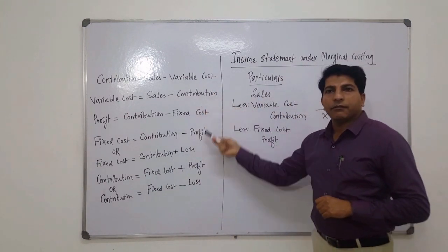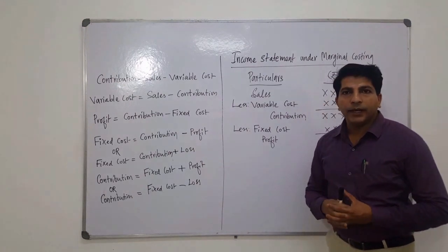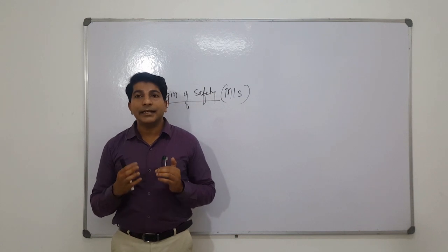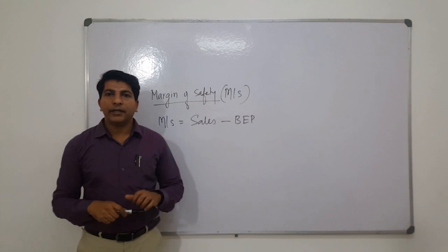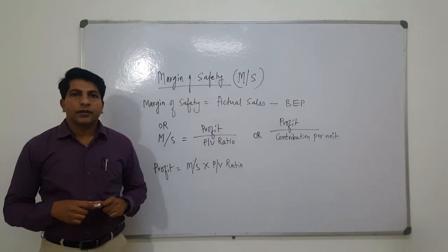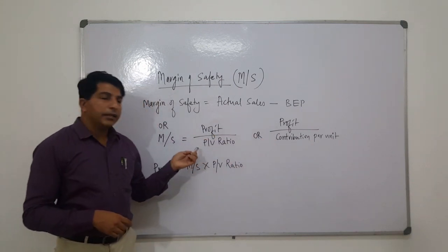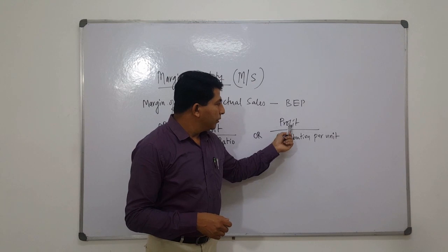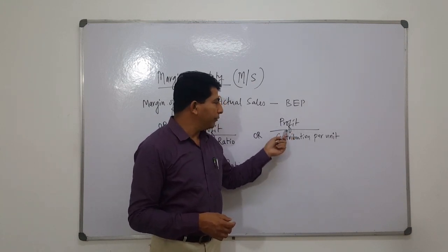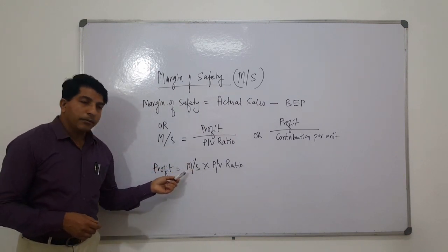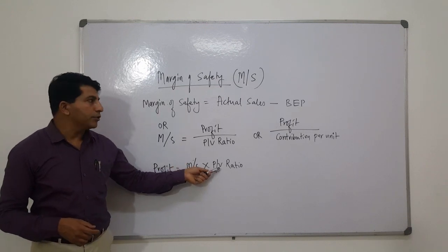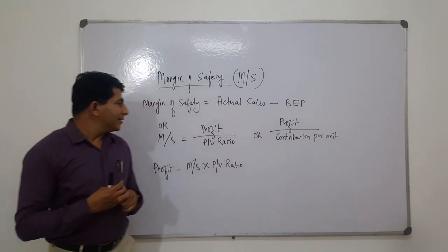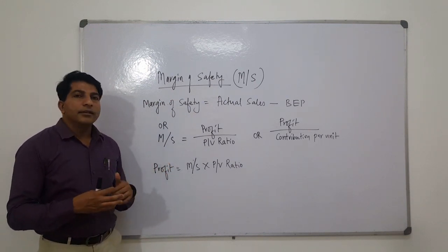Margin of safety may be defined as the difference between actual sales and sales at break-even point: sales minus break-even point equals margin of safety. Margin of safety can be calculated using two formulas: margin of safety equals profit divided by PV ratio, or profit divided by contribution per unit. With the help of PV ratio and margin of safety, we can calculate profit: profit equals margin of safety multiplied by PV ratio. Margin of safety is directly related to the business and indicates the profit margin.